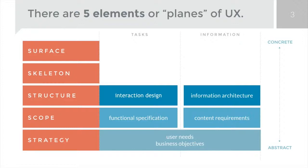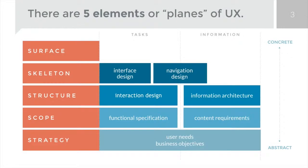Moving on to the skeleton plane, we have two components. Interface design is the arrangement of all the elements that exist on the interface — the buttons, menus, tools, and controls — the things that enable us to interact with the functionality of the system. We also have navigation design, which is a critical element of good user experience because navigation determines how the user moves through the information and how easily, intuitively, and obviously they can do so. If I'm anywhere in the site, I don't want to get lost — I want to know where I am, where I can go, and in many cases where I've been. That's what navigation design does.